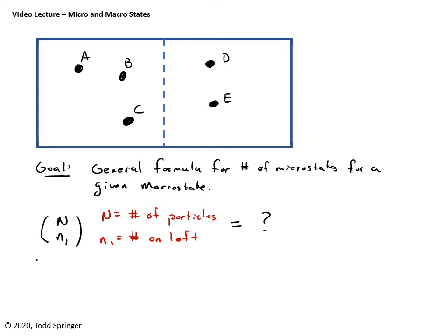It might help to do an example, one more example, just to motivate it. So let's do, here I have n equals 5 and let's say I'm picking n1 equal to 3. So I want to know the number of possible ways I can choose 3 from 5. So that's going to be 5 choose 3.